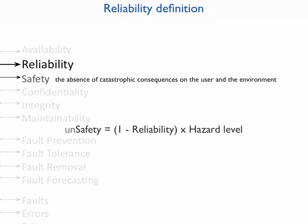Another very important term, closely connected to reliability, is safety. Safety is defined as the absence of catastrophic consequences on the user and the environment. We can see that if reliability is the probability that nothing bad will happen, then one minus reliability gives the probability that something bad can happen. And if we multiply this probability by the hazard level of that event, we obtain unsafety. That is how these two properties are connected.